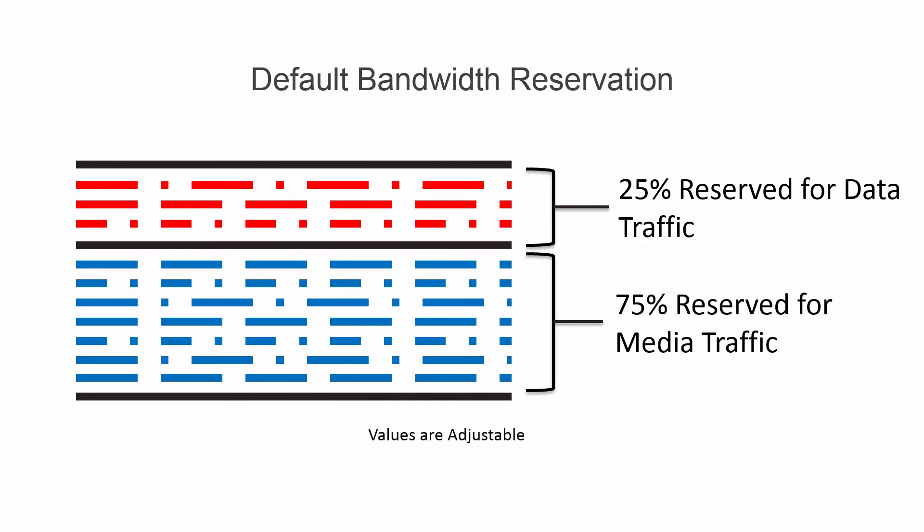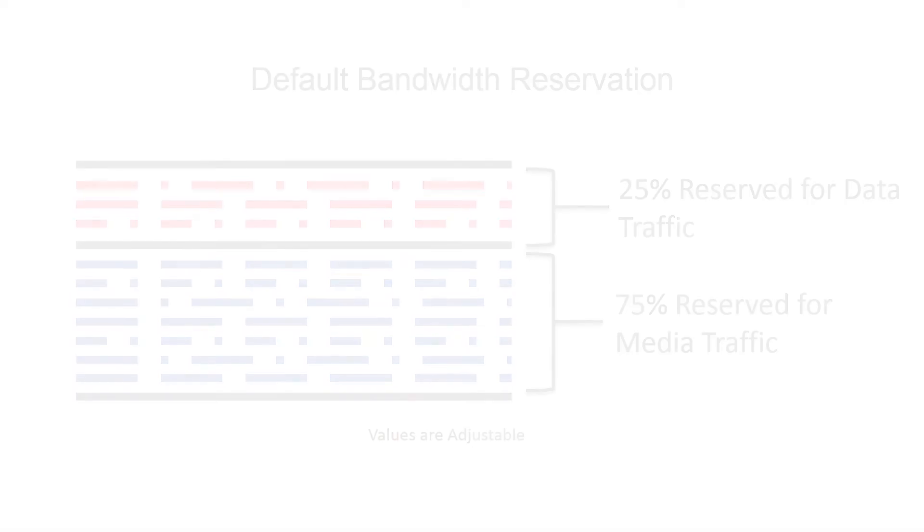So why does this matter to you? The advantages of the network vetting and protecting the media path are pretty obvious. But this reservation requires a network to participate in the media exchange. This is another reason that AVB-enabled switches are a desirable thing.